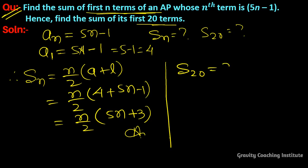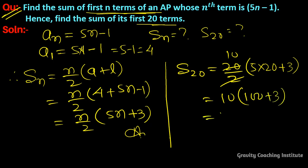Now find S₂₀. So n equals 20: 20 upon 2 times (5 into 20 plus 3). This is 10 times (100 plus 3), which equals 10 into 103, so equals 1030.